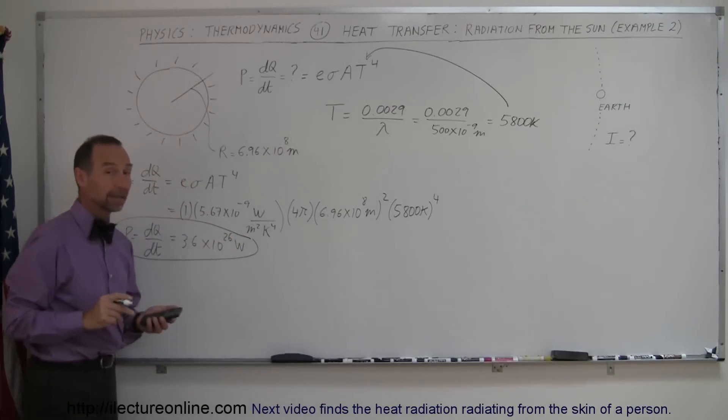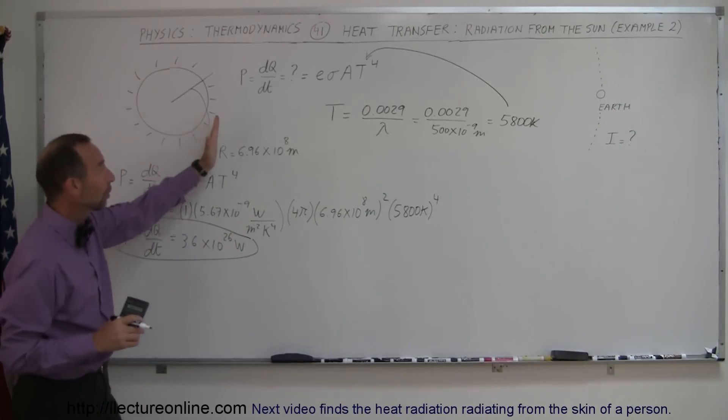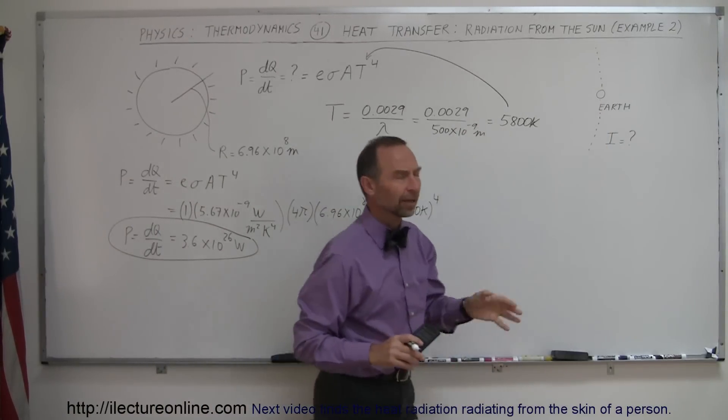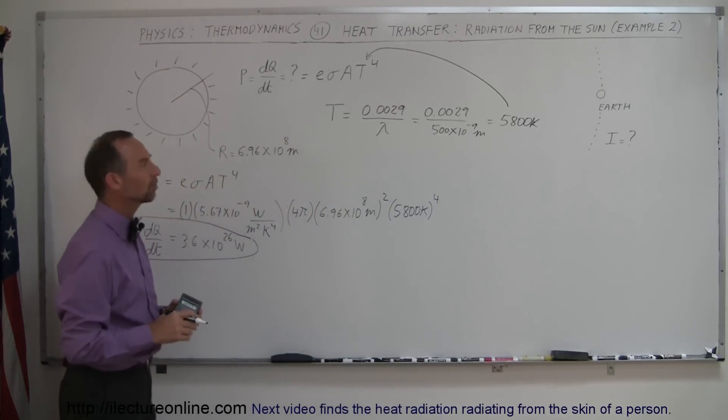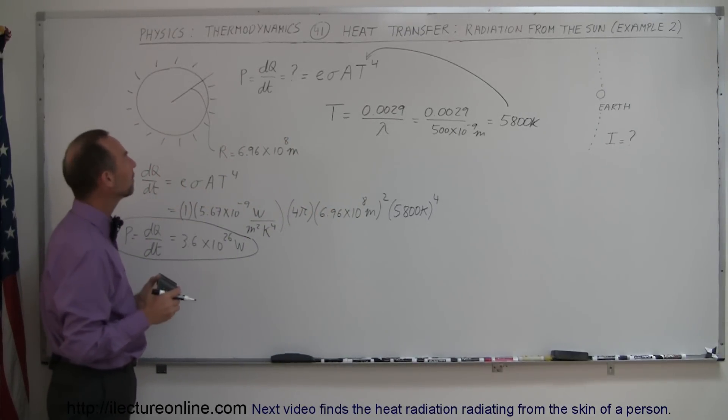All right. Now, the next thing we're going to do is find out what the intensity of that sunlight is when it finally reaches the Earth. Of course, the Earth is about 150 million kilometers away. On average, it's more like 149,000 kilometers away. And so, what would be the intensity of the sunlight reaching the Earth at that point?